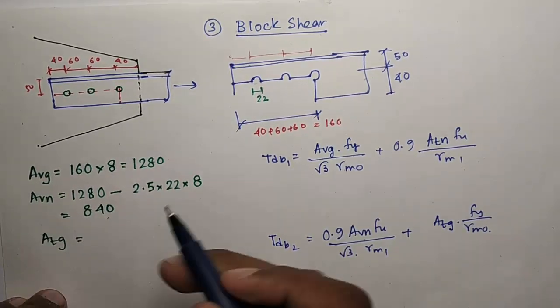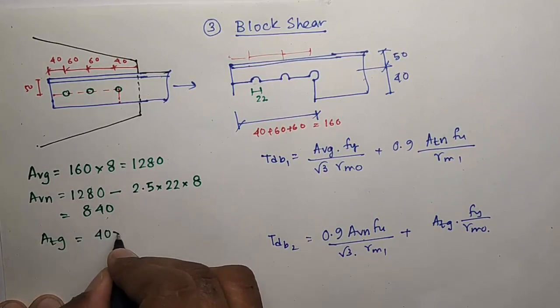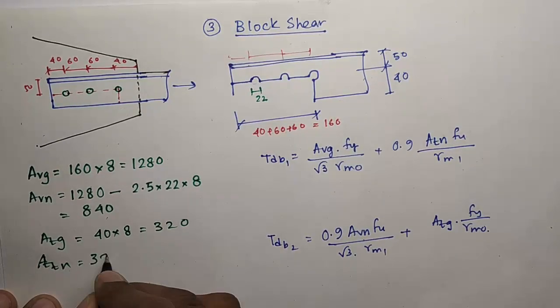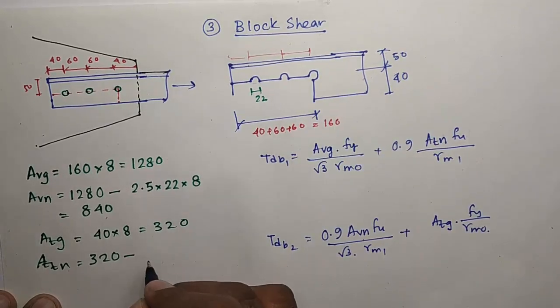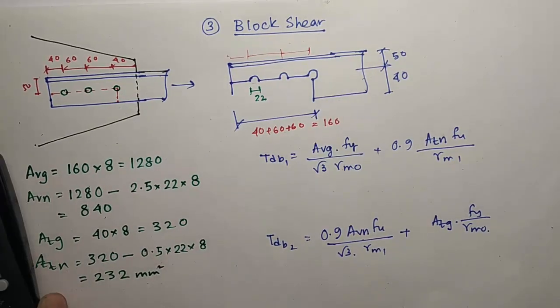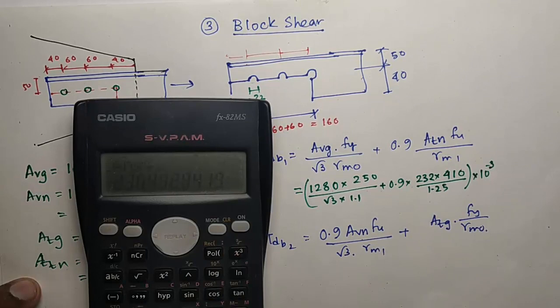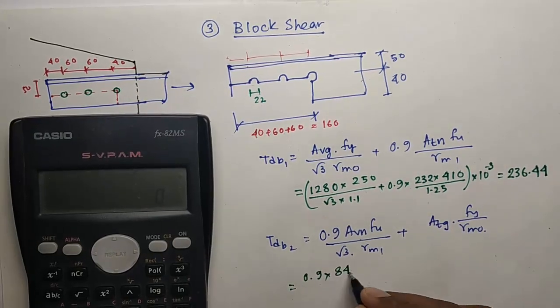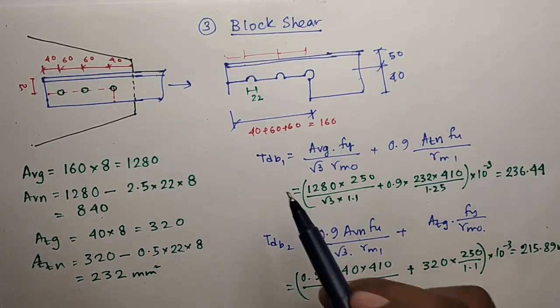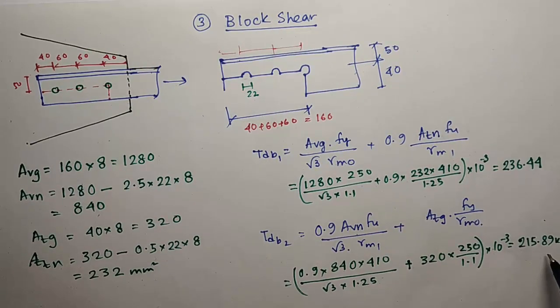Now ATG. ATG is perpendicular to force, this line. Gross area, the length is 40, so 40 into 8 is 320. ATN is the net area, which is 320 minus half of this hole, so 0.5 into 22 into 8, giving 232. Put these values in the equation. TDB1 is 236.44 and TDB2 is 215.89 kilonewton.